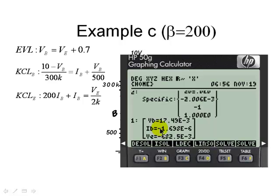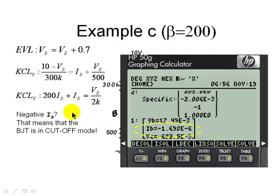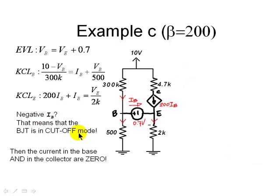That is all we care about right now. We say, negative IB, that's impossible. That means only one thing, the BJT is in cutoff mode. That means that the currents in the base and the collector are zero.